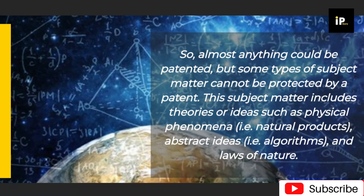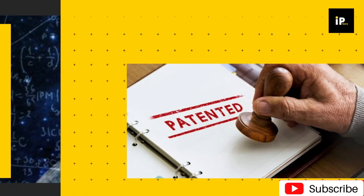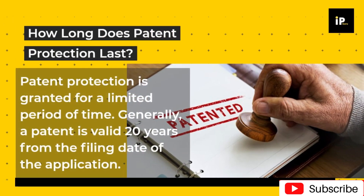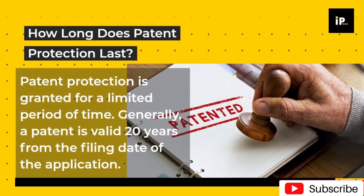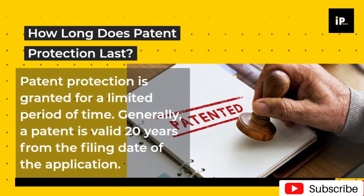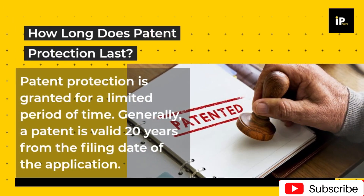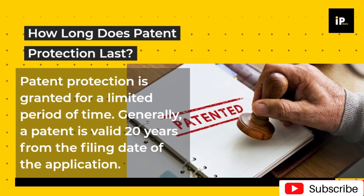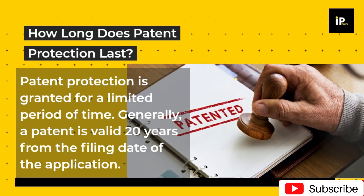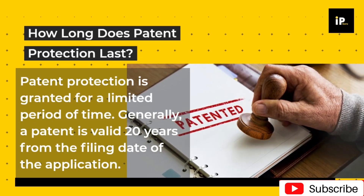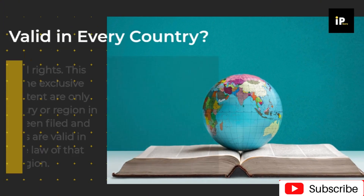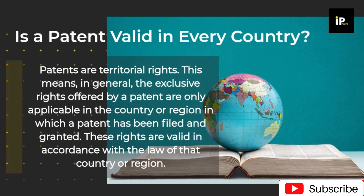Non-patentable subject matter includes theories or ideas such as physical phenomena, natural products, abstract ideas such as algorithms, and laws of nature. How long does patent protection last? Patent protection is granted for a limited period of time — generally a patent is valid for 20 years from the filing date of the application.